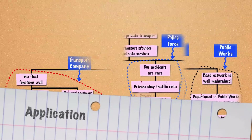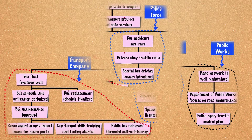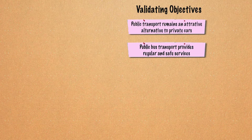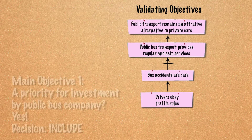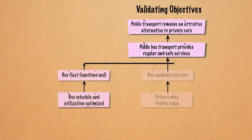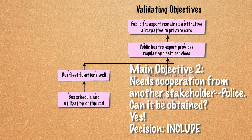Application. In our example objectives tree, we can identify three changes actionable by the public bus company, the police force, and the public works. Examine each of these actors and probe if they can achieve the respective objectives identified. For each objective, critically examine whether the stakeholders can actually achieve the objective's specific requirements through a series of probing questions. For each question, judge the strength of the group consensus. In our example, the decision is to include in the proposed project.